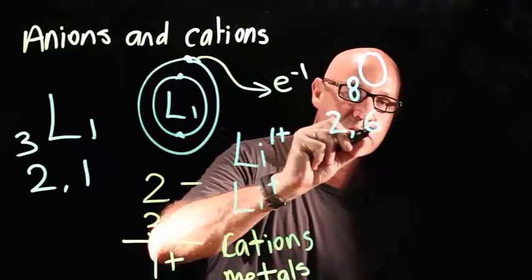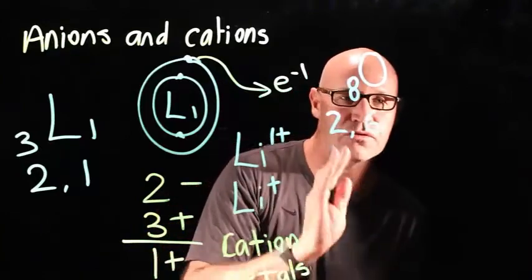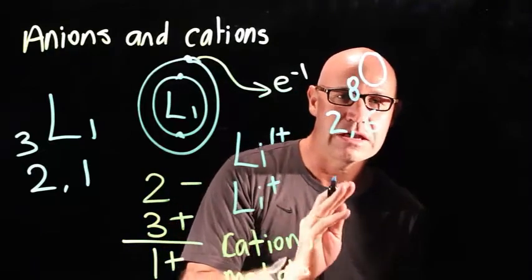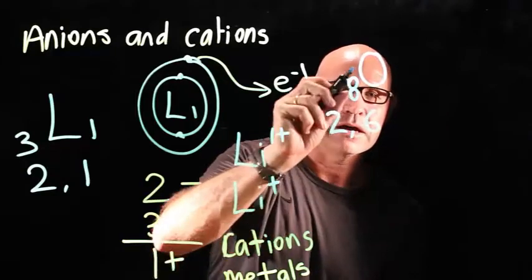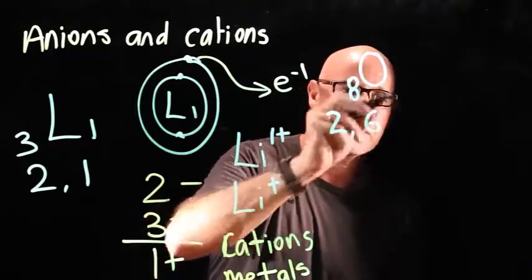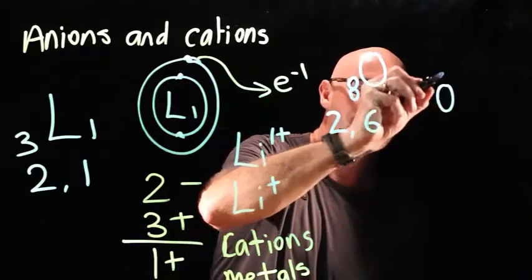So therefore, oxygen has a tendency to want to accept two more electrons. So therefore, it can become more negative. Let's explain what I mean. It's probably the best thing to do is to show you on a Bohr diagram.